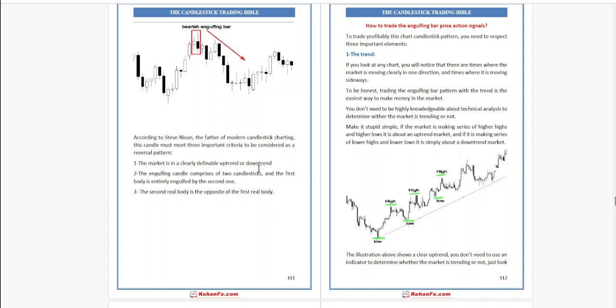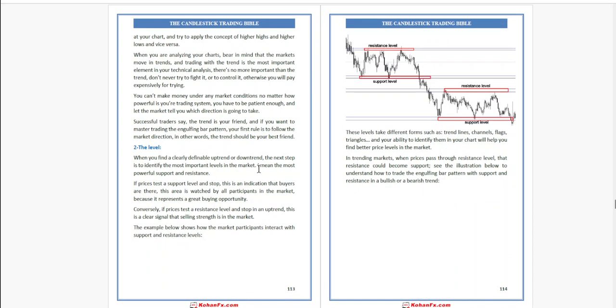If the market is making a series of lower highs and lower lows, it is simply a downtrend market. The illustration shows a clear uptrend and you don't need to use any indicator. Just look at your chart and apply the concept of higher highs and higher lows, and vice versa.